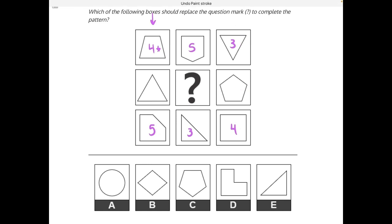We can use this logic to find our missing element by either looking at our row and seeing that we have three and five sides, so we need a four-sided figure in the middle, and the only four-sided answer choice would be answer choice B.